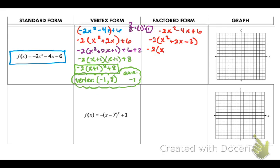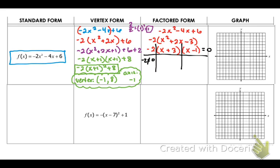What times what gives me negative 3 but also positive 2? That's going to be x plus 3 and x minus 1, giving negative 3 and positive 2. Once I've done that, I can solve by setting it equal to zero. Negative 2 cannot equal zero, so x equals negative 3 and x equals positive 1. So your answers are negative 3 and positive 1.